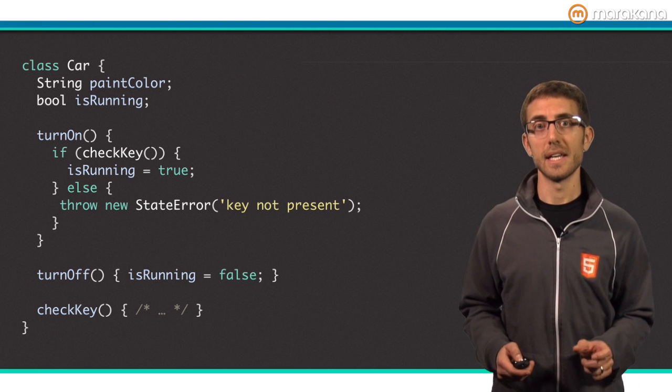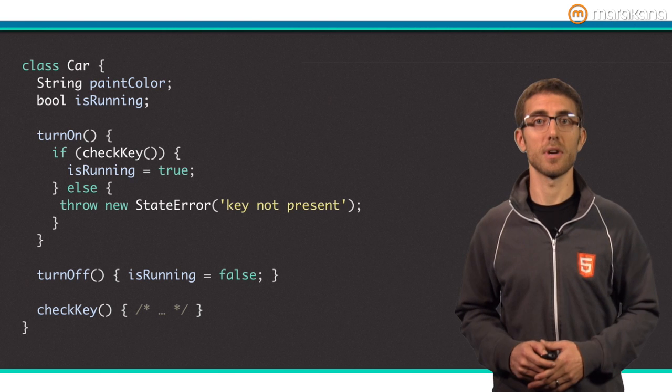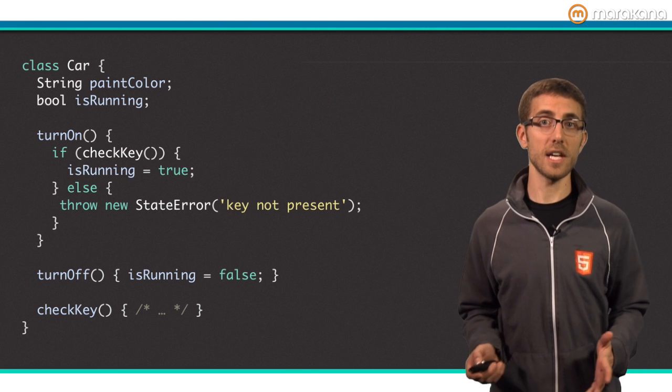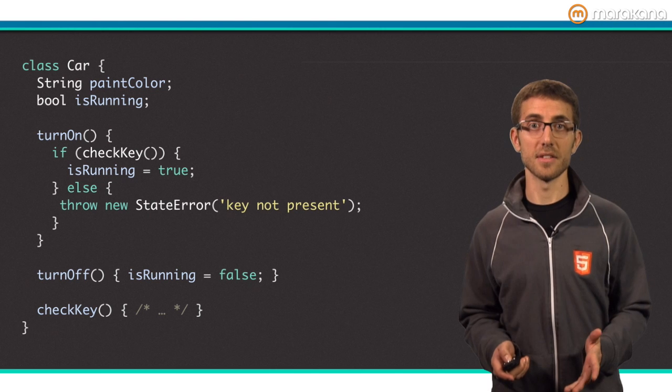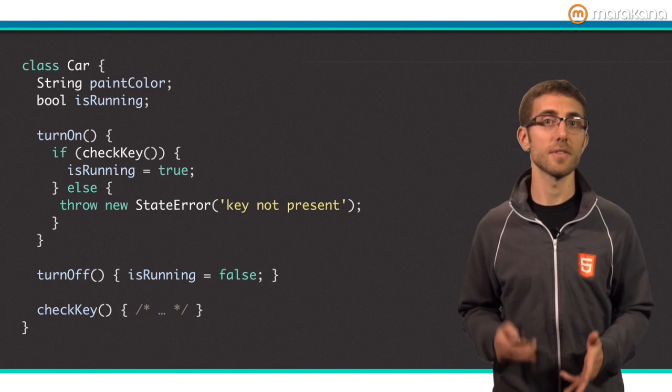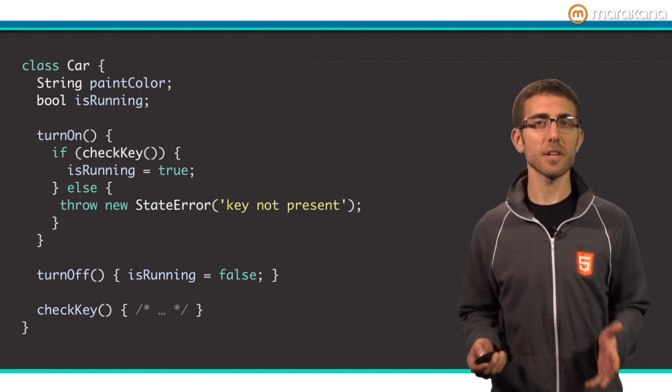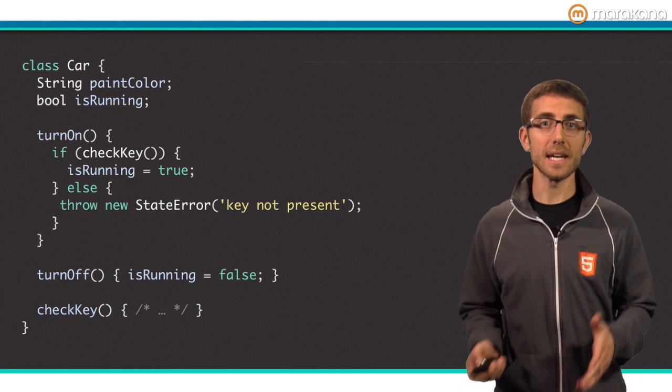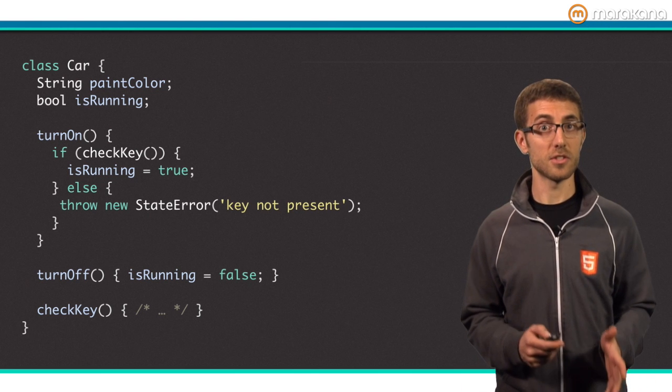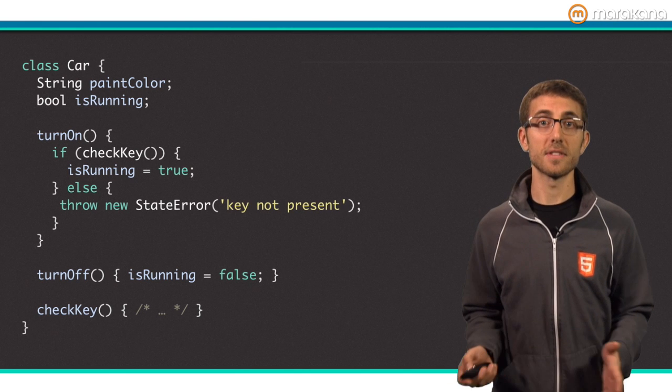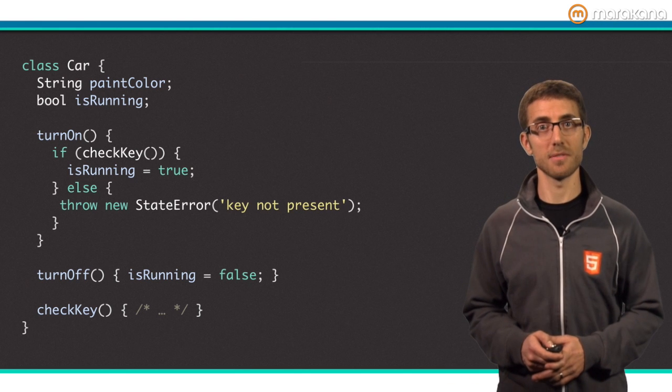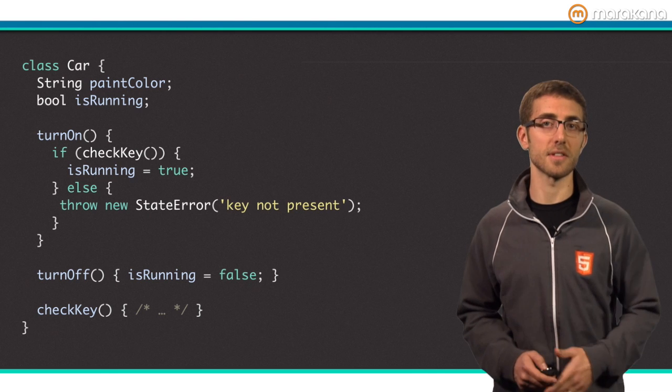This class is named Car. It has two fields, paintColor and isRunning. Fields are used to hold the state of an object. This Car class has three methods: turnOn, turnOff, and checkKey. Methods are like functions that are bound to an object, and they can access an object's state. Methods change or expose the state of an object. For example, the turnOn method checks first if there is a key present, and if so, starts the car.